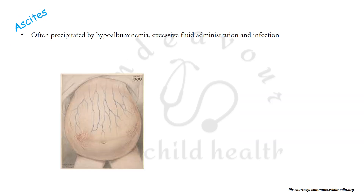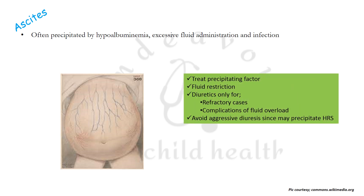Ascites is often precipitated by three major factors: hypoalbuminemia, excessive fluid administration, and infection. Management comprises of treating the precipitating factor and fluid restriction. Diuretics should be used only for refractory cases and complications of fluid overload, and one must avoid aggressive diuresis since this may precipitate hepatorenal syndrome.